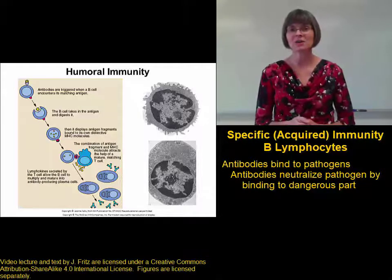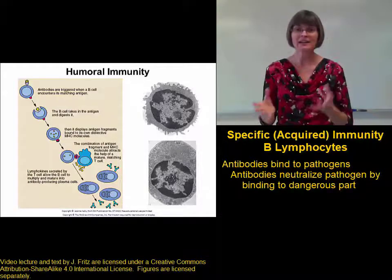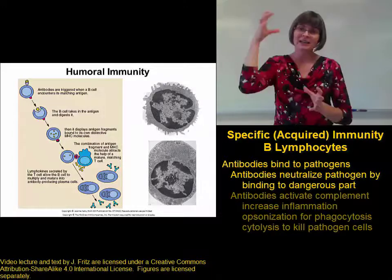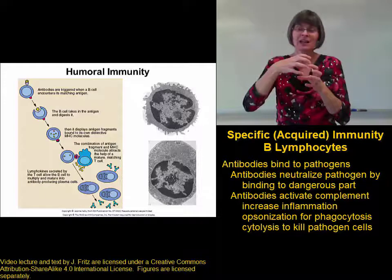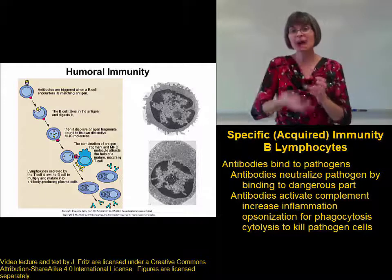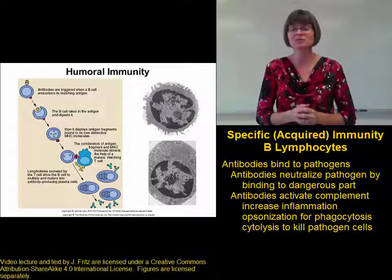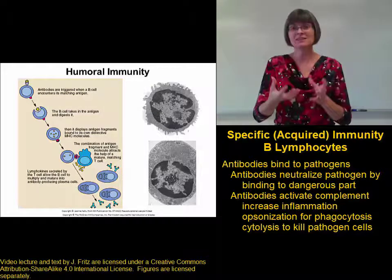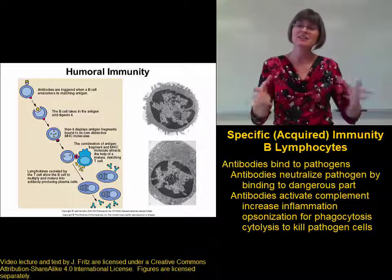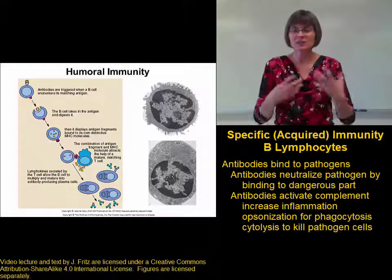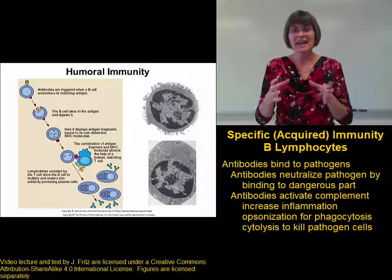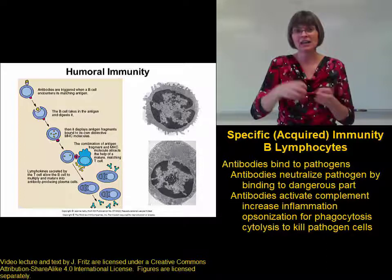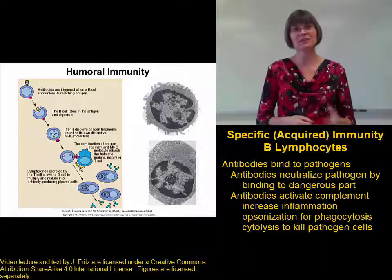A second mechanism by which antibodies help fight pathogens is that antibodies activate complement. When an antibody binds to its pathogen, that binding activates complement, which we talked about as a nonspecific mechanism. Activated complement helps the immune response in several different ways: it makes it easier to phagocytize pathogens, it increases inflammation, and complement proteins can make a hole in the pathogen membrane itself and destroy the pathogen through the process of cytolysis.